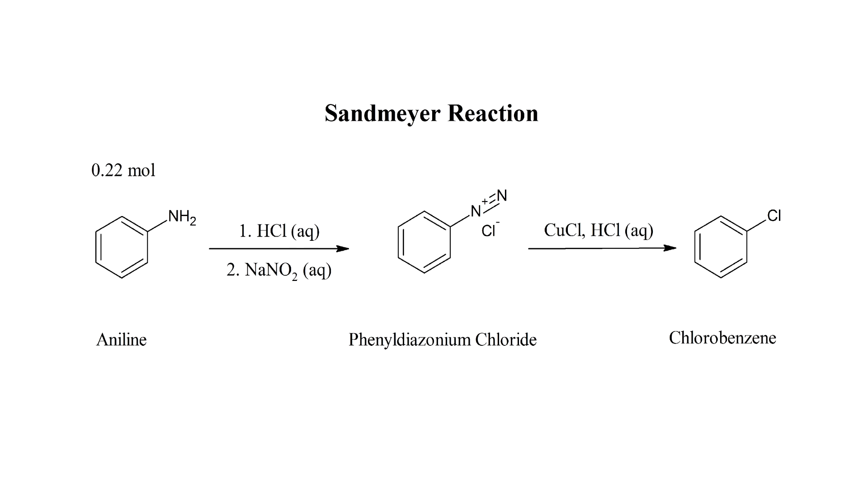One method of preparing this compound is through the Sandmeyer reaction. This reaction entails the diazotization of aniline to a phenyl diazonium salt followed by the catalytic decomposition of that salt with copper chloride. The main resultant product is chlorobenzene.